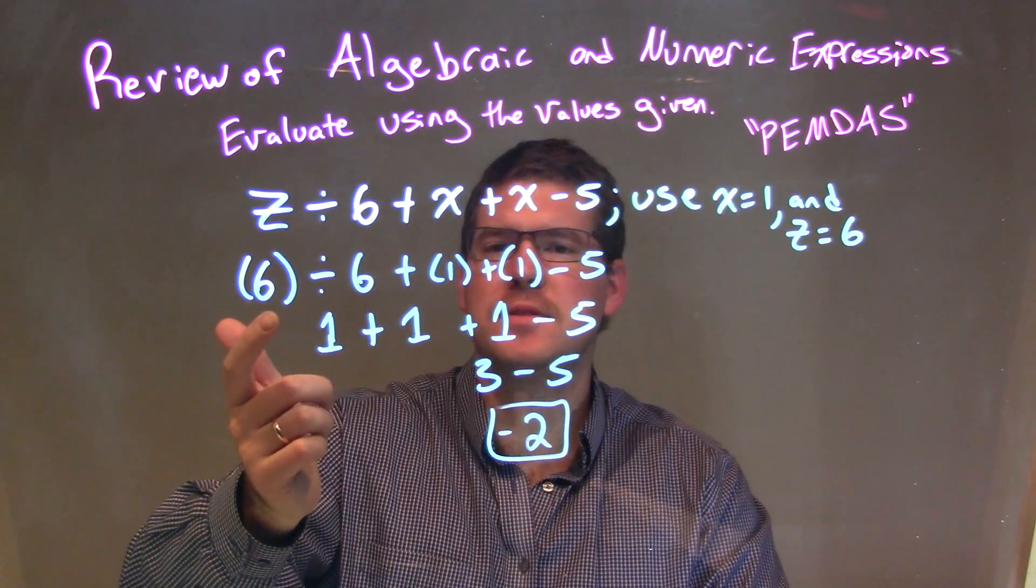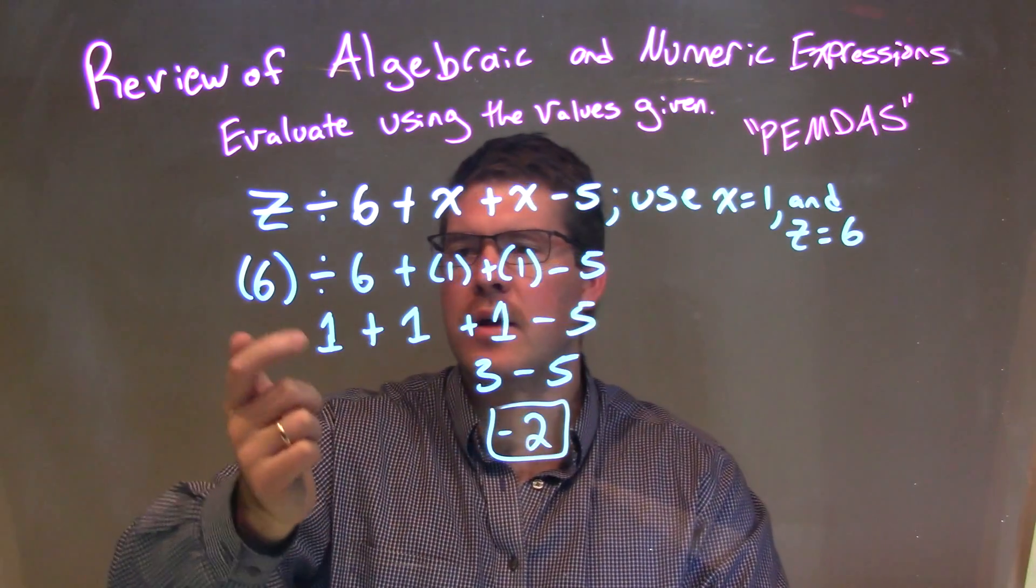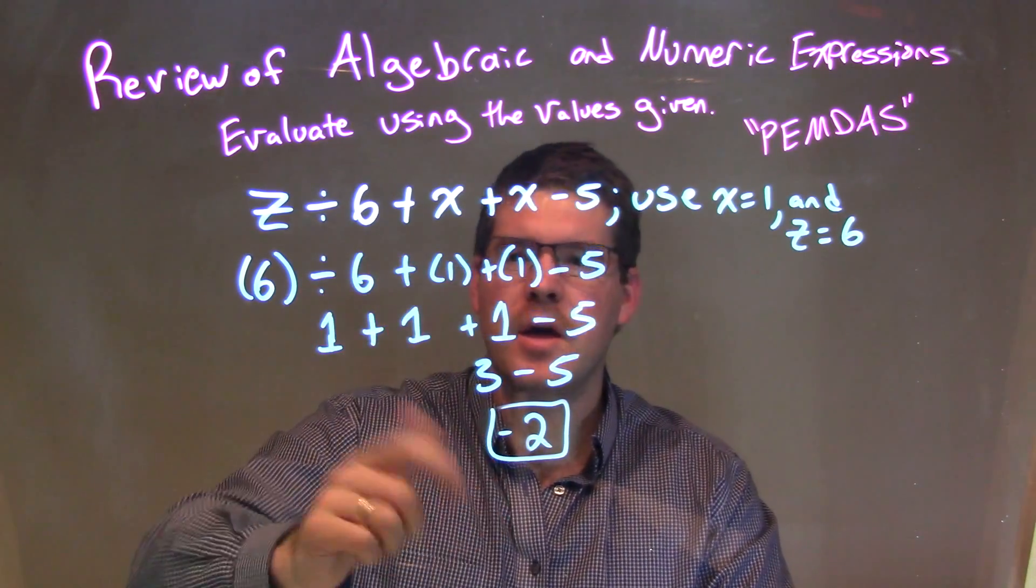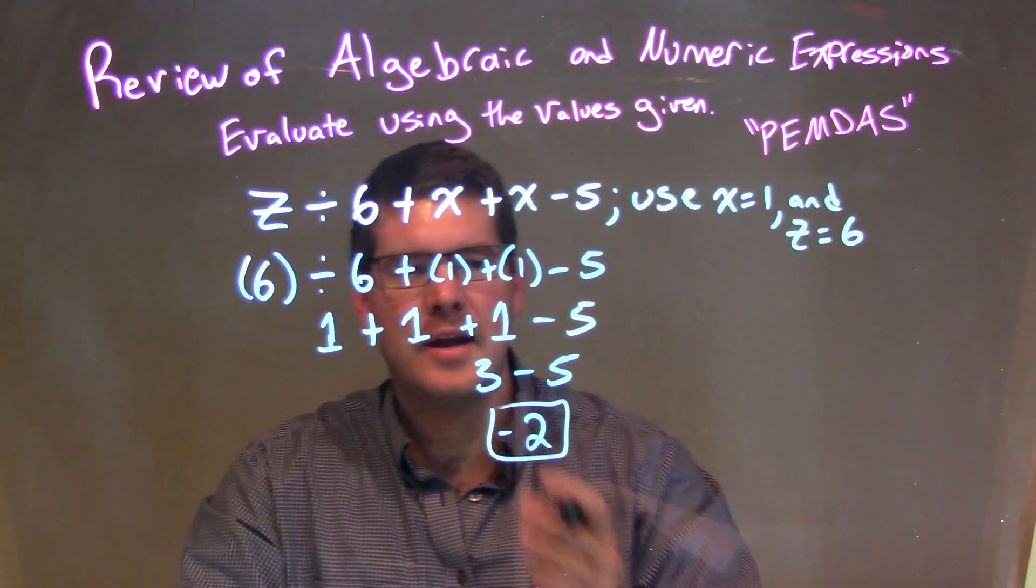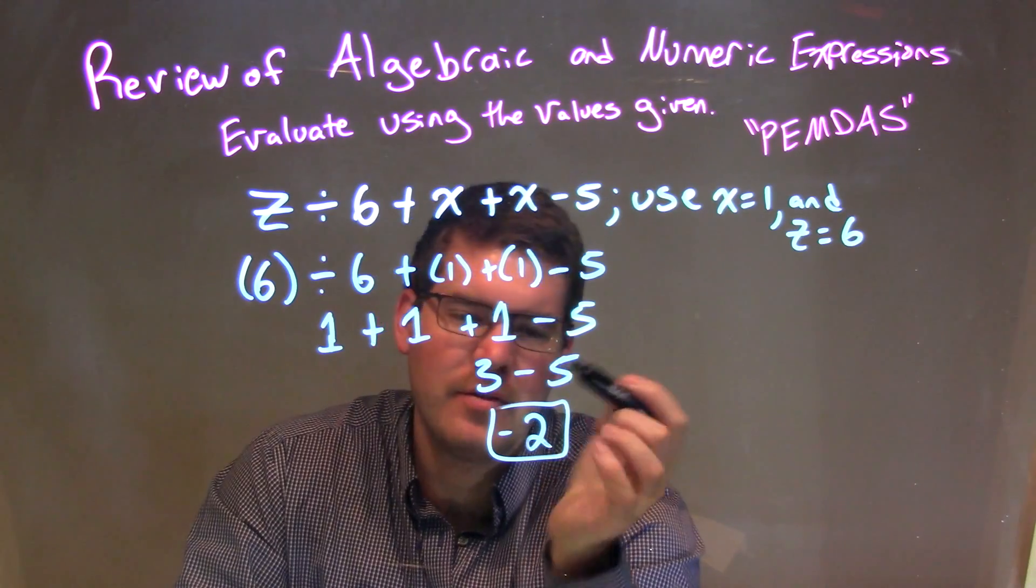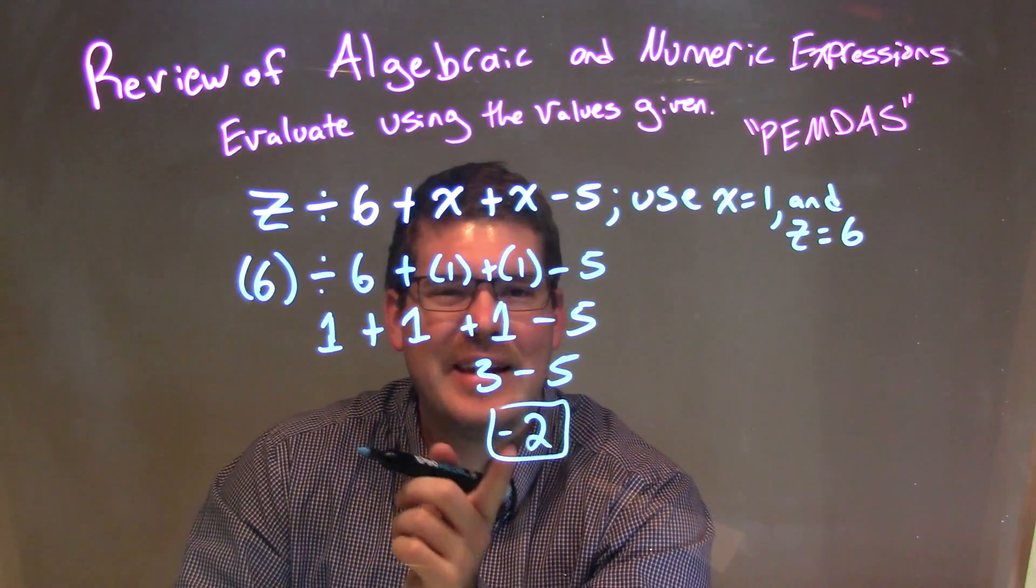Then from there we had to simplify. Division came first out of addition, division, addition, subtraction over there. Division first, 6 divided by 6 is a 1, and then we brought down everything else. We then went left to right because we just had addition and subtraction. So 1 plus 1 plus 1 was a 3, then we subtracted the 5, and we had a final answer again of a negative 2.